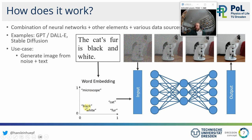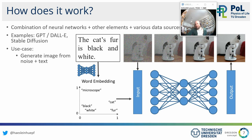Each word or phrase is expressed with numbers in this embedding. When you can turn a word like "microscope" into values in this embedding, you can use it as input to a neural network. So the big question remains: how does the arrow from text to the neural network work? This is also a neural network that does exactly that, using a mechanism called self-attention.